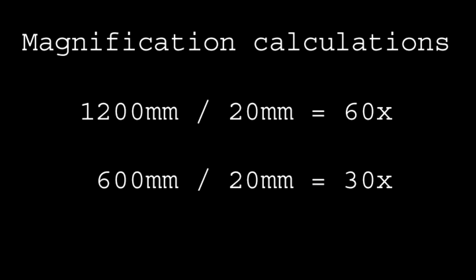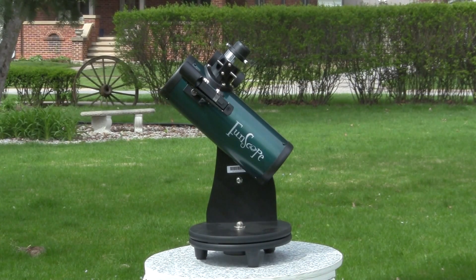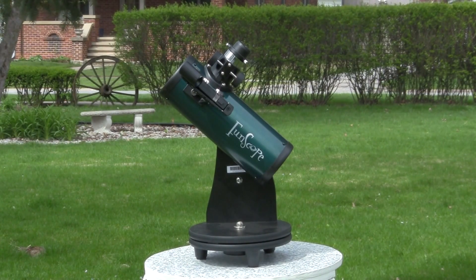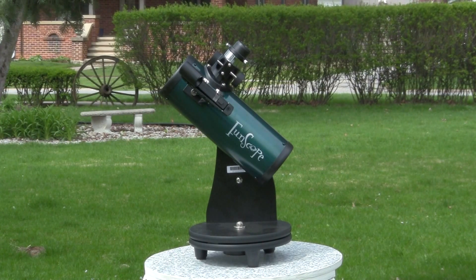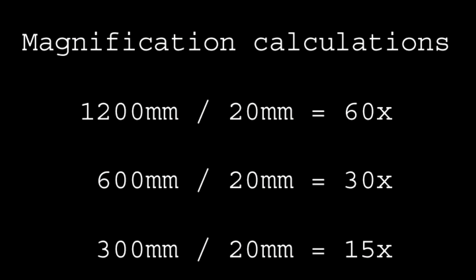And for a short, stubby little reflector like this one, it's got a focal length of just 300mm, so dividing it by 20mm, we get just 15 times magnification. Think about this for a moment, if we change to a 10mm eyepiece, we see the change in magnification for each, but the ratio of magnification doesn't change among the telescopes. We'll talk about those ratios in a moment.